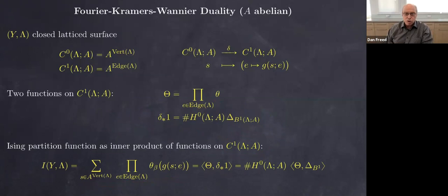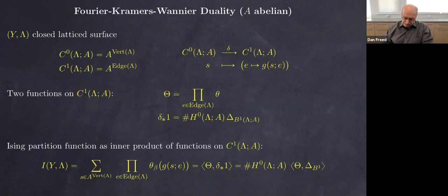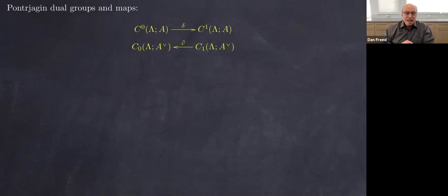This elementary rewriting says that up to a constant we can write the partition function as an inner product of two functions on this set of co-chains, which is actually a finite abelian group. That finite abelian group has a Pontryagin dual group — the group of characters — which are the chains with values in the Pontryagin dual group. These two pair to Q mod Z; similarly for the one co-chains and one chains in the dual group, and the dual of the co-boundary operator delta is the usual boundary operator.